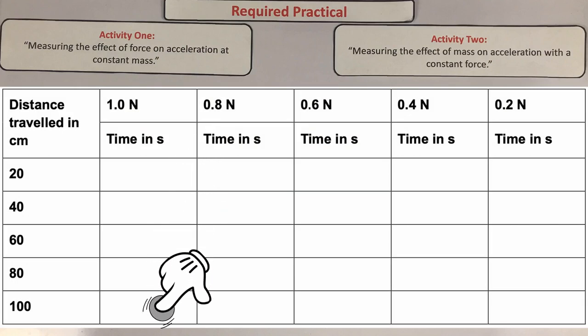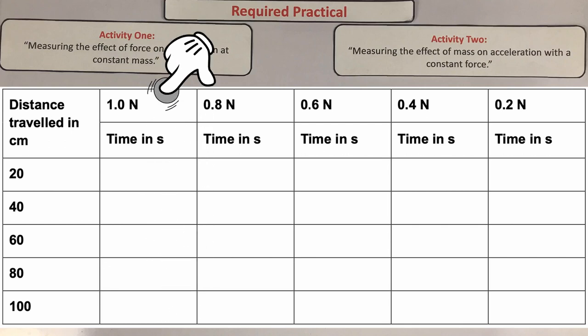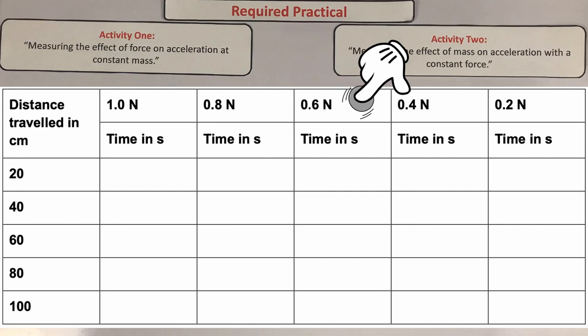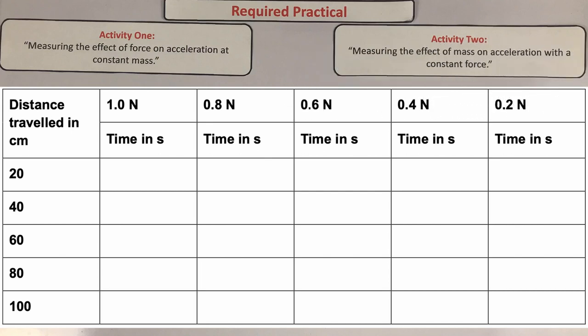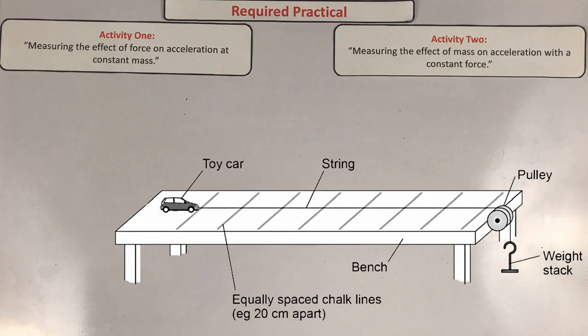Repeat the steps for decreasing weights on the stack — for example, going from 1 newton down to 0.8 newtons, all the way to 0.2 newtons. For the second activity, set up the bench pulley, weight stack, and car, then select a weight stack that will just accelerate the car along the bench.